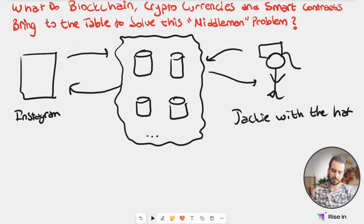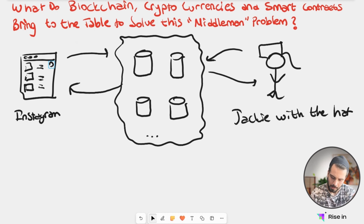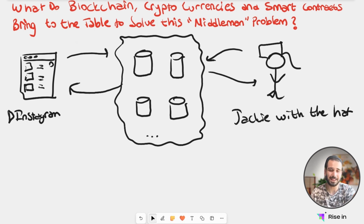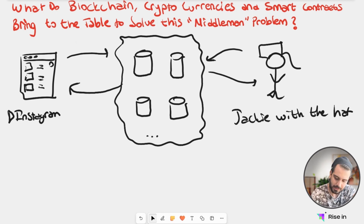Now we have a board of servers, and let's make this look a little bit more like Instagram. So let's see what this decentralized structure can offer to us. Once Jackie wants to communicate with the Instagram — let's say this is the decentralized Instagram — we go through this decentralized structure. So instead of the closed server, we go here. This structure, with this consensus mechanism, decides which server is going to get this job.